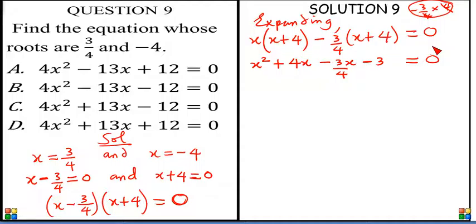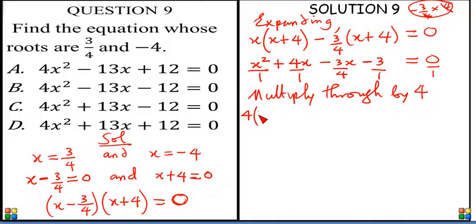Let's try to multiply through by 4 now. Because this is over 1, x squared over 1, 4x over 1, 3x over 4, minus 3 over 1. So if I put over 1, over 1, and over 1 here, 0 also over 1. The LCM of the denominators is 4. So I want to multiply each term by the LCM of the denominator, which is 4. So we have 4 into brackets x squared over 1.